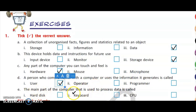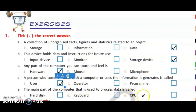The main part of the computer that is used to process data is called — hard disk, keyboard, or CPU? This is also very easy. The answer is CPU.